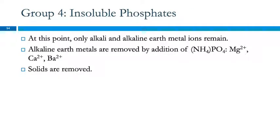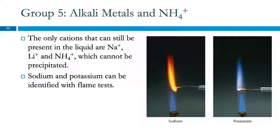Now we've got alkali and alkaline earth metal ions left, and we can precipitate the alkaline earths using phosphate. Now we're down to sodium, lithium, and ammonium, which do not precipitate with anything. And one way to identify these is with a flame test. If you put a solution containing sodium ions in a flame, you get a bright yellow flame. Potassium ions will give you a purple flame.